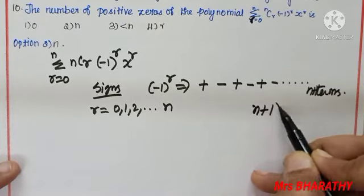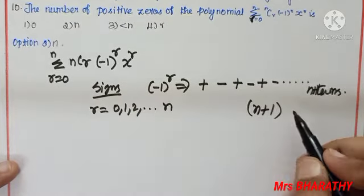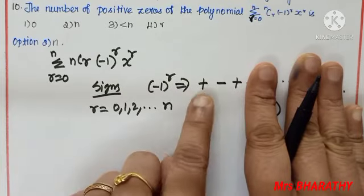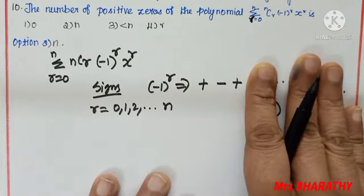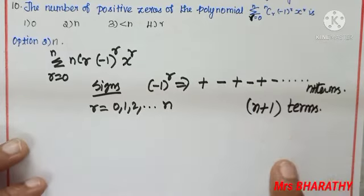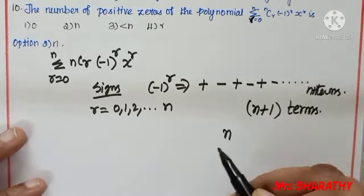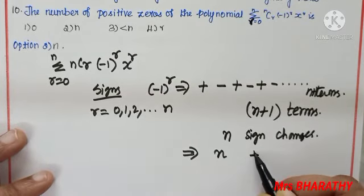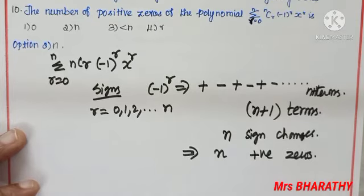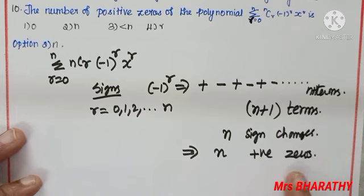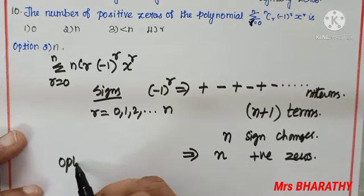Since r ranges from 0 to n, there are n + 1 terms. With n + 1 alternating terms, there are n sign changes. For example, 3 terms give 2 sign changes; 4 terms give 3 sign changes. So with n + 1 terms we have n sign changes, meaning n positive zeros. Option 2 is the right choice.